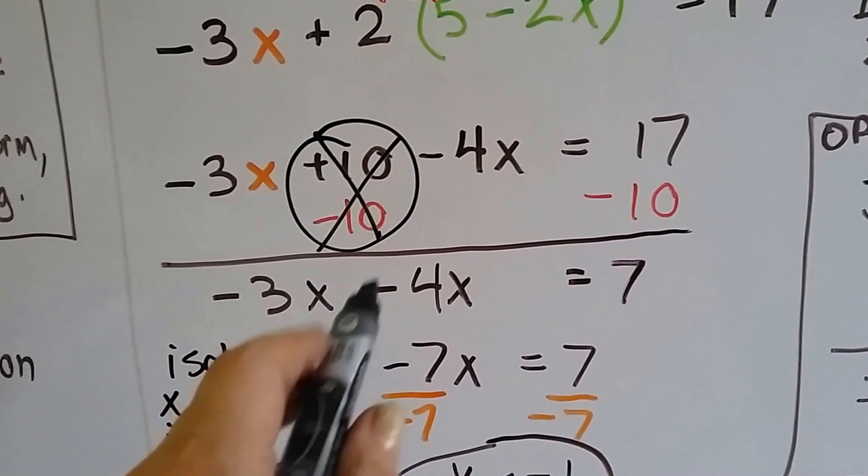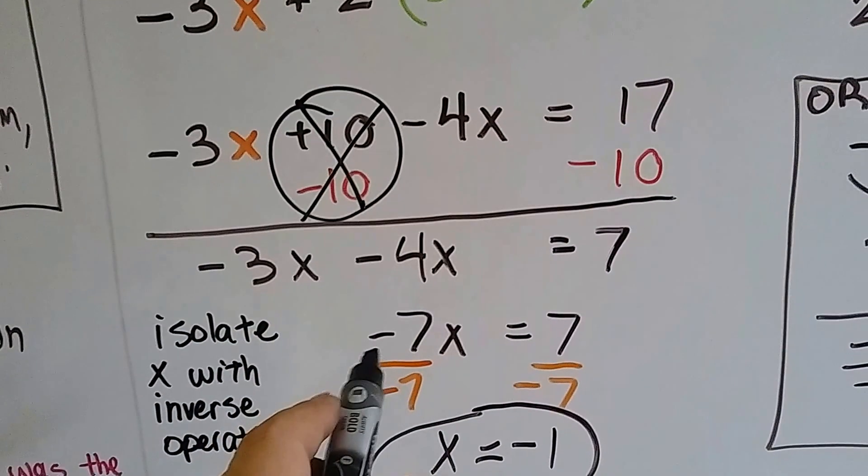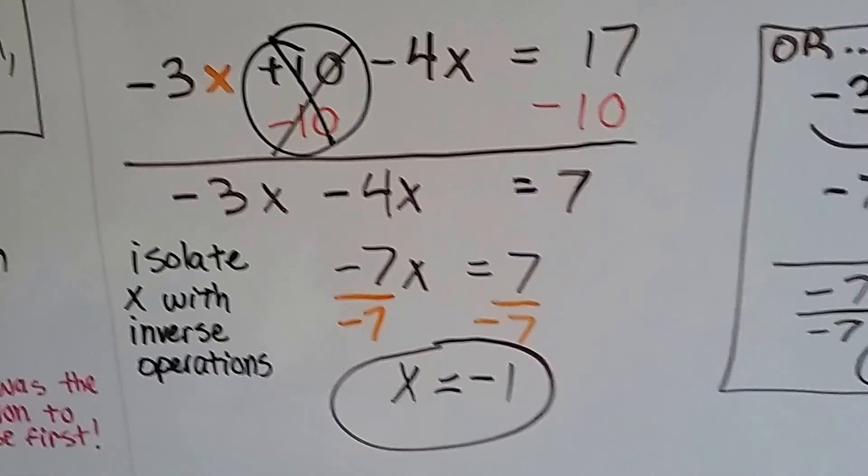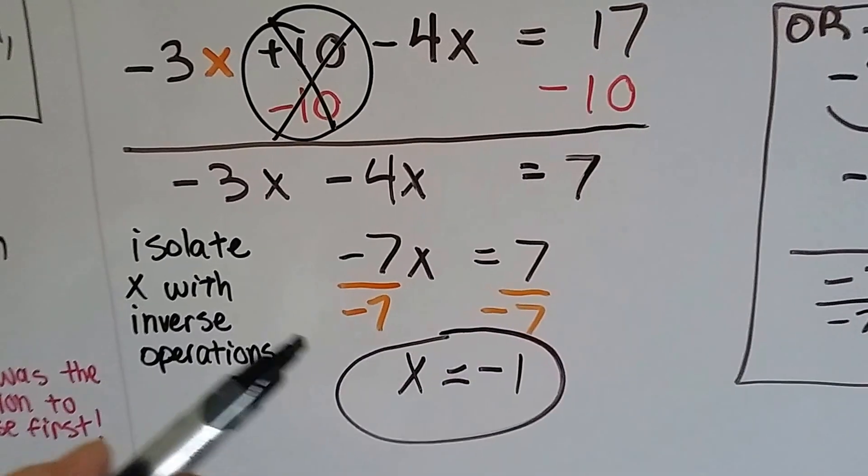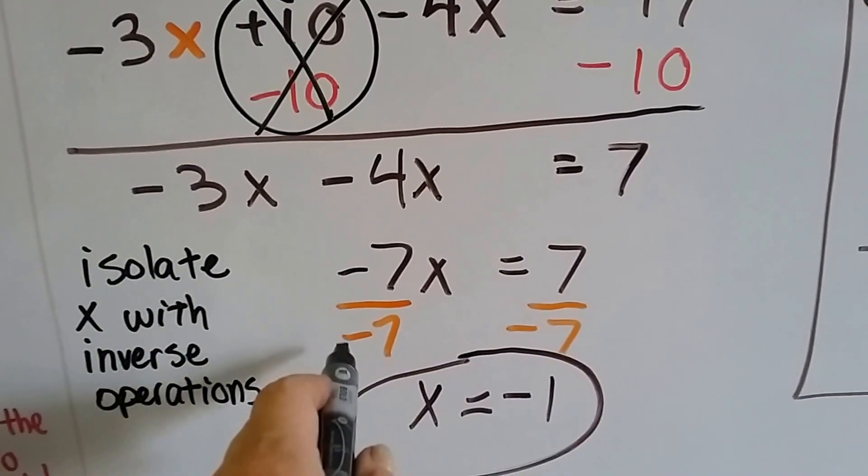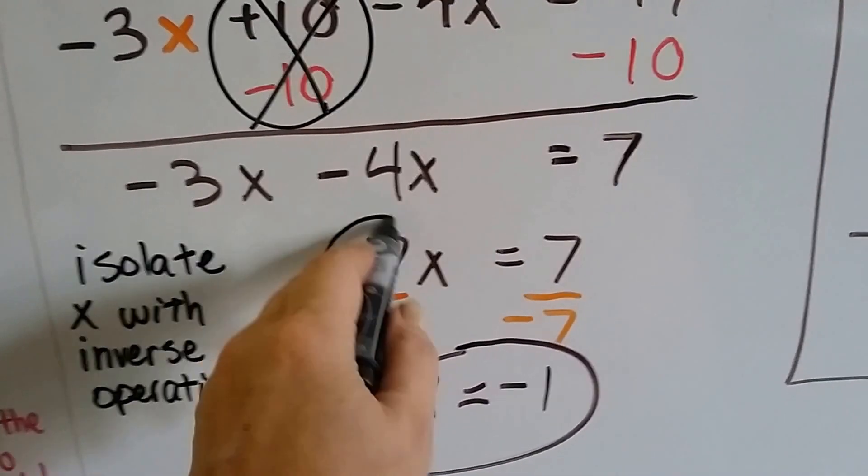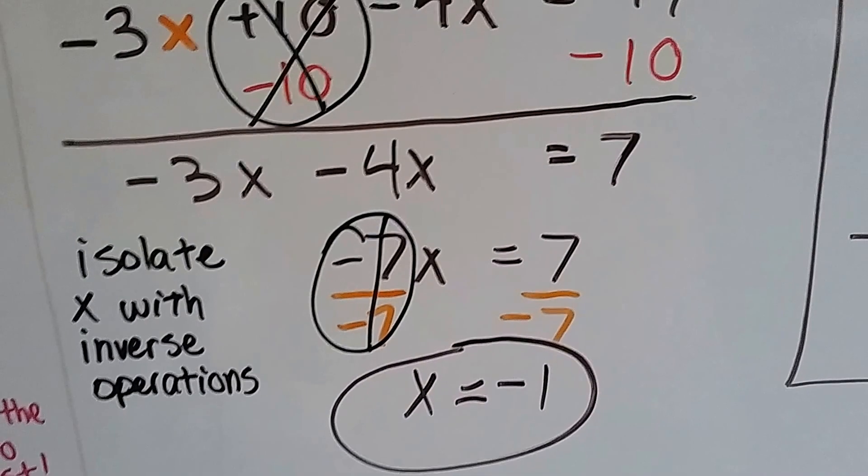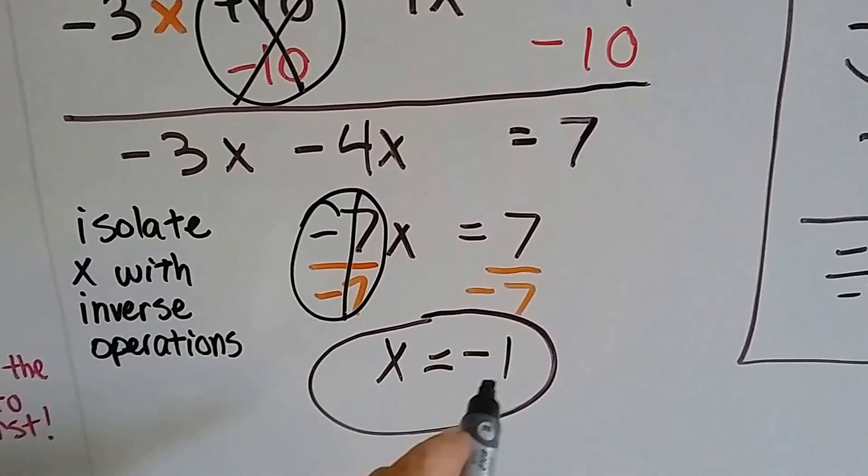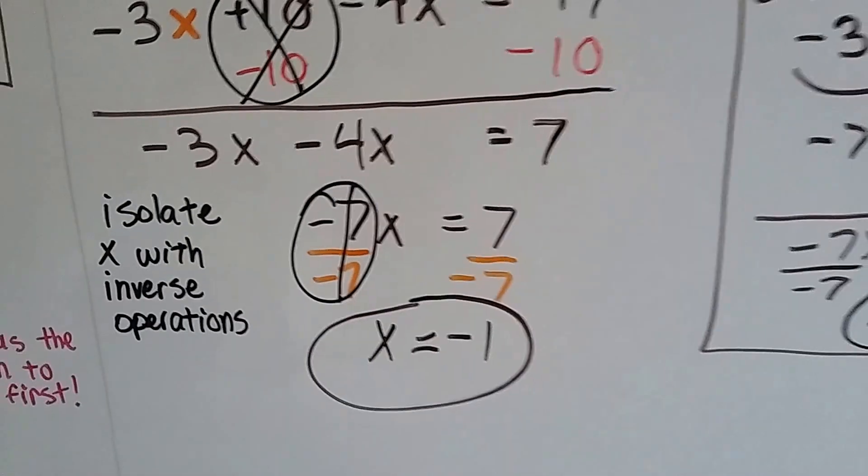I create a zero pair here and I get 7 on this side because 17 take away 10 is 7. Now I've got negative 3x minus 4x, well that's going to give us a negative 7x. And we're going to keep trying to isolate to get the x on one side with inverse operations, so I'm going to divide each side by negative 7. That's going to create our friend the invisible 1, and 7 divided by negative 7 is a negative 1, so we know x is a negative 1.